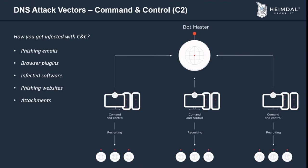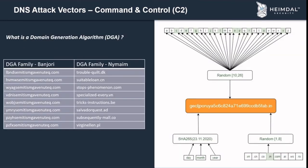To stay active longer, attackers use Domain Generation Algorithms (DGA). Since C2 malware communicates with the bot master using domains, if a domain is blocked, the attacker needs a new one. DGA solves this: the malware on the infected computer has a function that generates a new domain on a determined period, while the command server tries to register the same domain at the same time. If it succeeds, communication resumes. The algorithm typically chooses random alphabetic characters, encodes the current date from the infected computer, and appends a random top-level domain from a predetermined list.